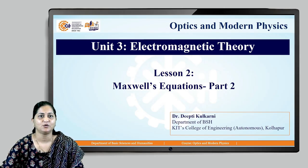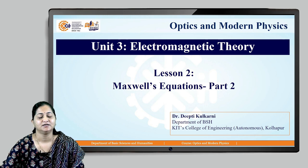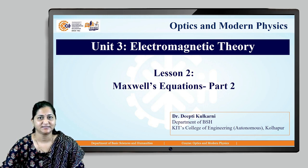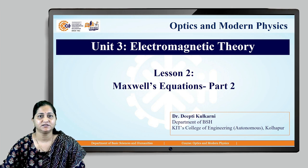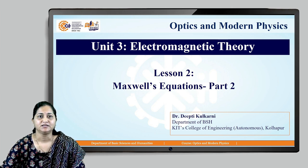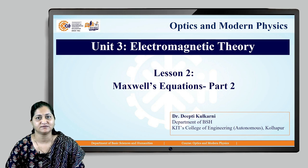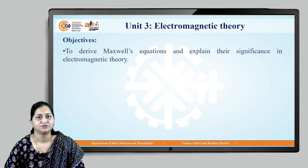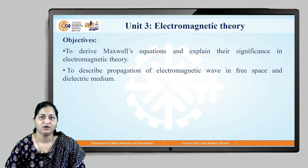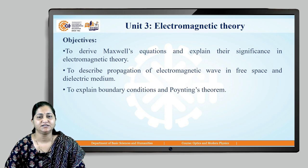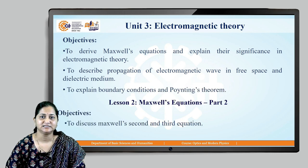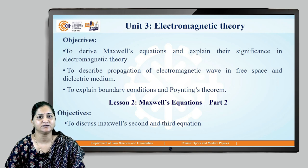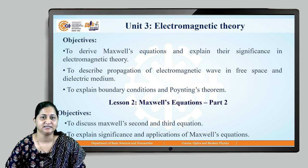Welcome back to this optics and modern physics course. We are seeing unit number three, that is electromagnetic theory. We have seen Maxwell's first equation in lesson number one, so in this lesson we will see the second and third Maxwell's equations. The objectives of this unit are: to derive Maxwell's equations and explain their significance in electromagnetic theory, to describe propagation of electromagnetic waves in free space and dielectric medium, to explain boundary conditions and Poynting theorem. In this lesson we will discuss Maxwell's second and third equations.